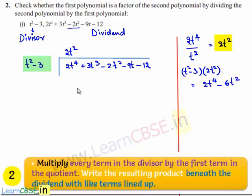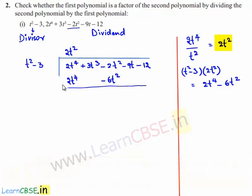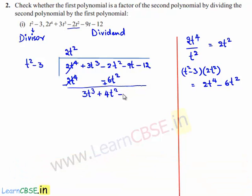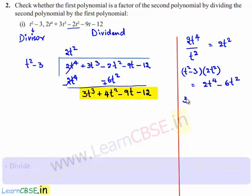The multiplication result, which is 2t⁴ minus 6t², is written here. Here it is minus and here it is plus, so 2t² and minus 2t² cancel. We get 3t³ minus 2t² plus 6t², giving plus 4t². This becomes minus 9t minus 12. So this is the new dividend and the highest degree term in the new dividend is 3t³.